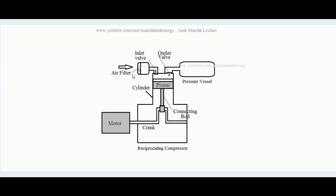There is an air filter whose job is to screen out dust and debris from the air, because these can damage the internal parts of the piston-cylinder system. Overall, the piston reciprocates to and fro between the top dead center and bottom dead center, taking in low pressure air from the atmosphere through the air filter and pushing it into the pressure vessel at raised pressure — this is done continuously by the reciprocating compressor.